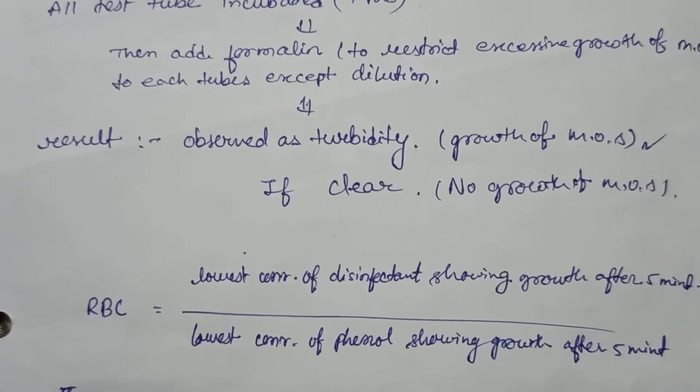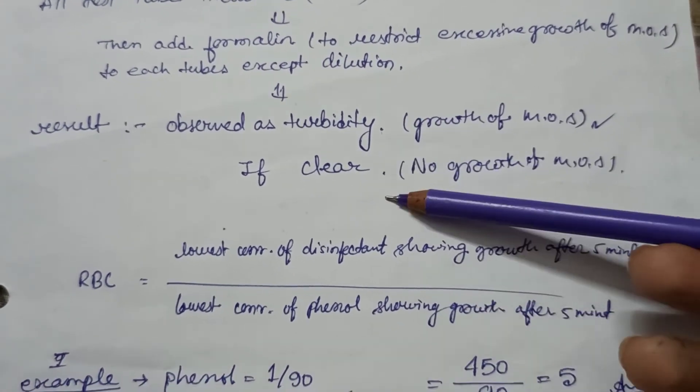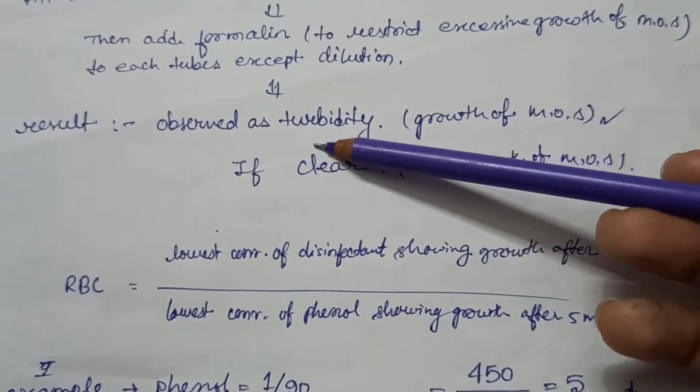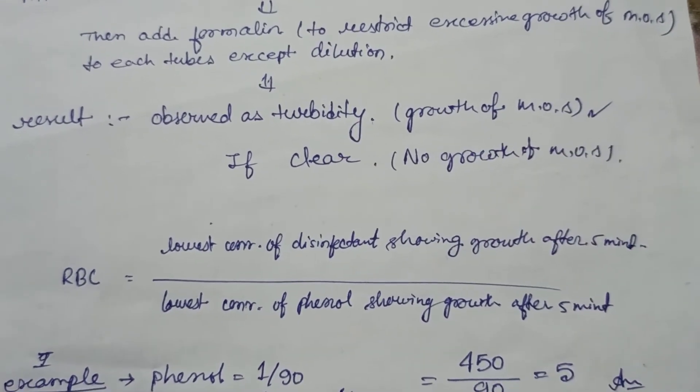Then we will add formalin to restrict the excessive growth of the microorganism to each tube except dilution. In the result, we will observe turbidity or clear. If the test tubes are clear, it means no growth of microorganism. If there is turbidity, it means the microorganisms are growing.